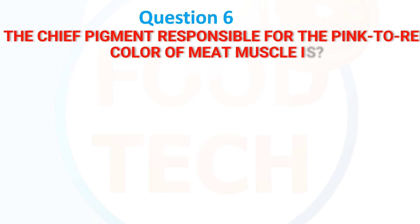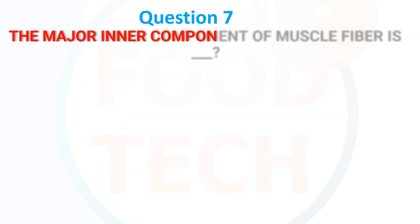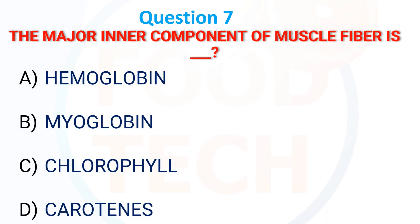The chief pigment responsible for the pink to red color of meat muscle is: A) Hemoglobin, B) Myoglobin, C) Chlorophyll, D) Keratin. The answer is Myoglobin. The major inner component of muscle fiber is: A) Hemoglobin, B) Myoglobin, C) Chlorophyll, D) Carotenoid. The answer is B) Myoglobin.